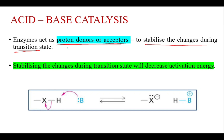One is acid-base catalysis. Enzymes act as proton donors or acceptors to stabilize the changes during the transition state. We have seen that enzymes decrease the activation energy, and during this transition state they act as proton donors or acceptors, and stabilizing these changes during the transition state will decrease the activation energy.